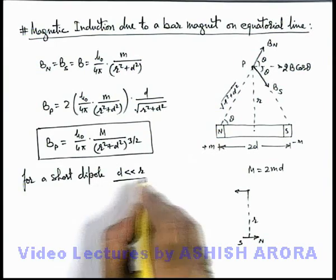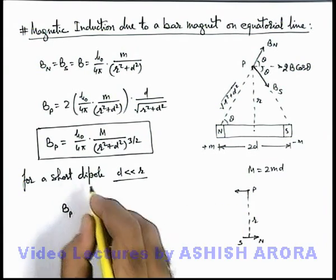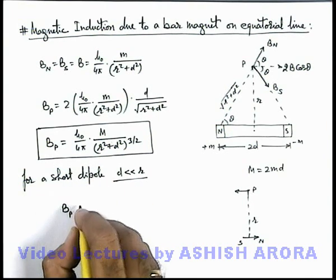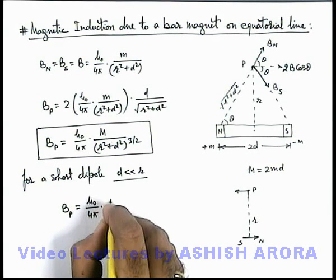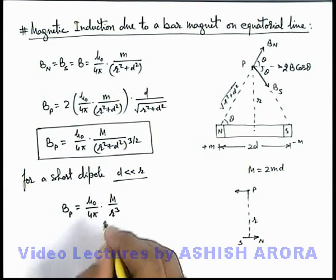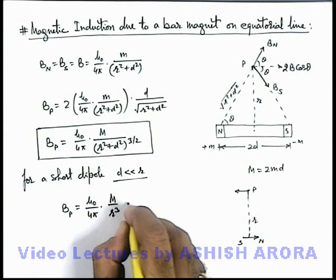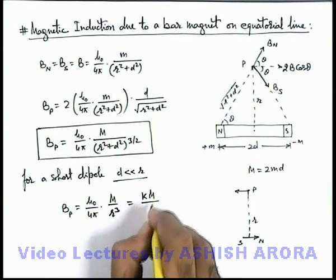So this can be generalized as B at point P due to a short dipole. Here also I can ignore d² compared to r², so this will be μ₀ over 4π, M by r³. And if I replace μ₀ by 4π by magnetic constant k, then it can be written as kM by r³.